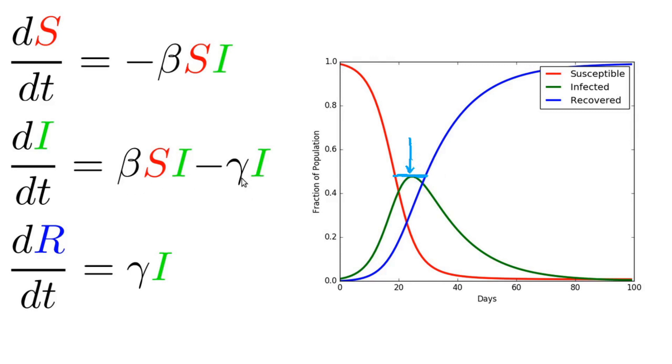It's when the first term is equal in magnitude to the second term, so that when I take their difference, I get zero. It says when the rate at which people are recovering is equal to the rate at which people are becoming infected, that's the time when this green curve is going to be at its maximum.